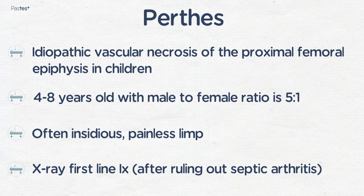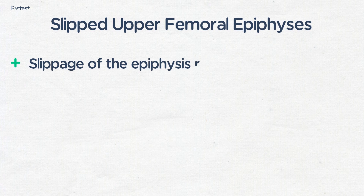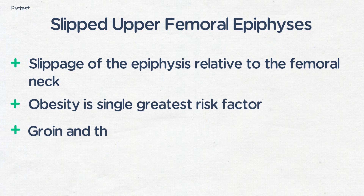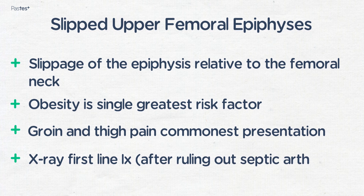The final cause of a limping child you should be aware of is SUFE, or slipped upper femoral epiphysis. This is slippage of the epiphysis relative to the femoral neck. The single greatest risk factor is obesity, and often they present with groin and thigh pain. Again, as with Perthes, you should rule out septic arthritis. An x-ray is your first-line investigation.